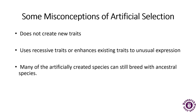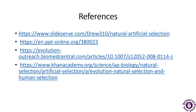There are some misconceptions about artificial selection. The first misconception is that artificial selection does not create new traits — it also uses recessive traits or enhances existing traits and useful expressions. The second misconception is that it only uses recessive traits. The third misconception is that many artificially created species can still breed with ancestral species. This was all about artificial selection.